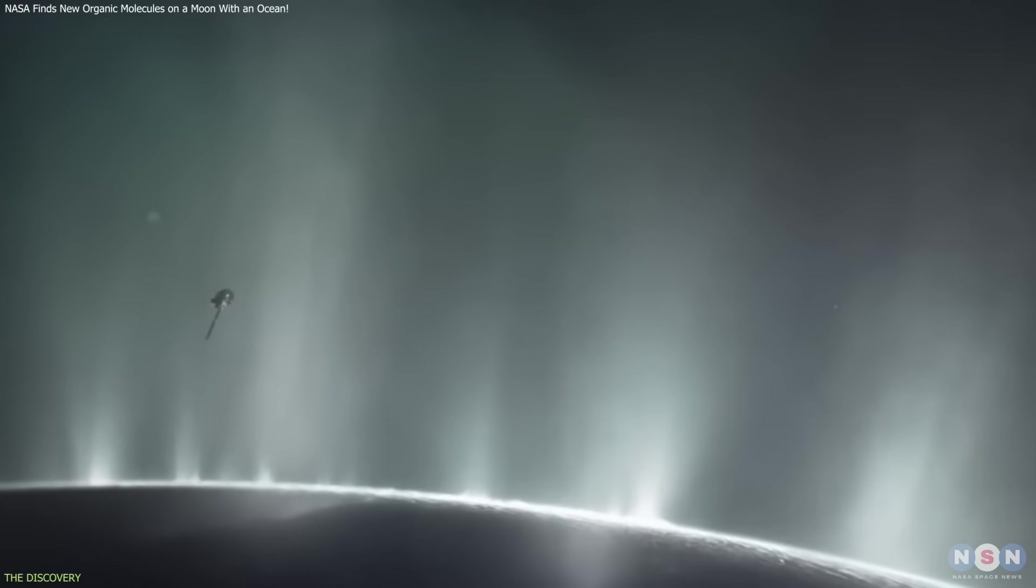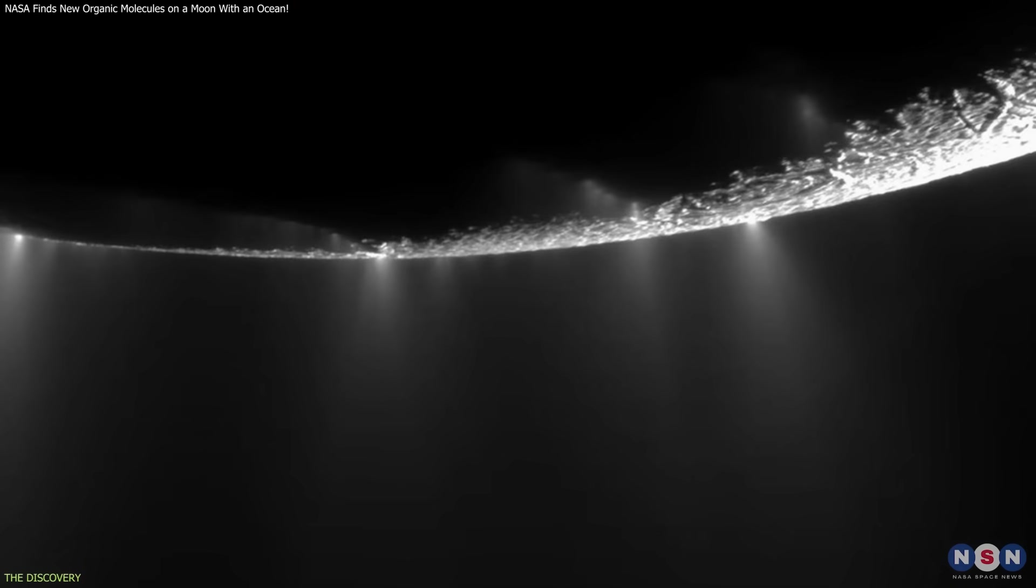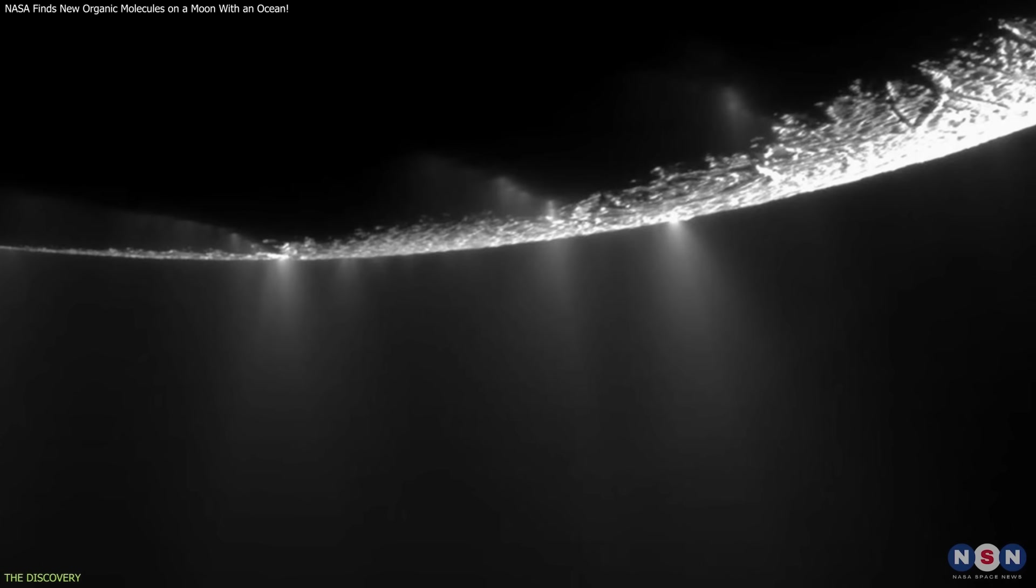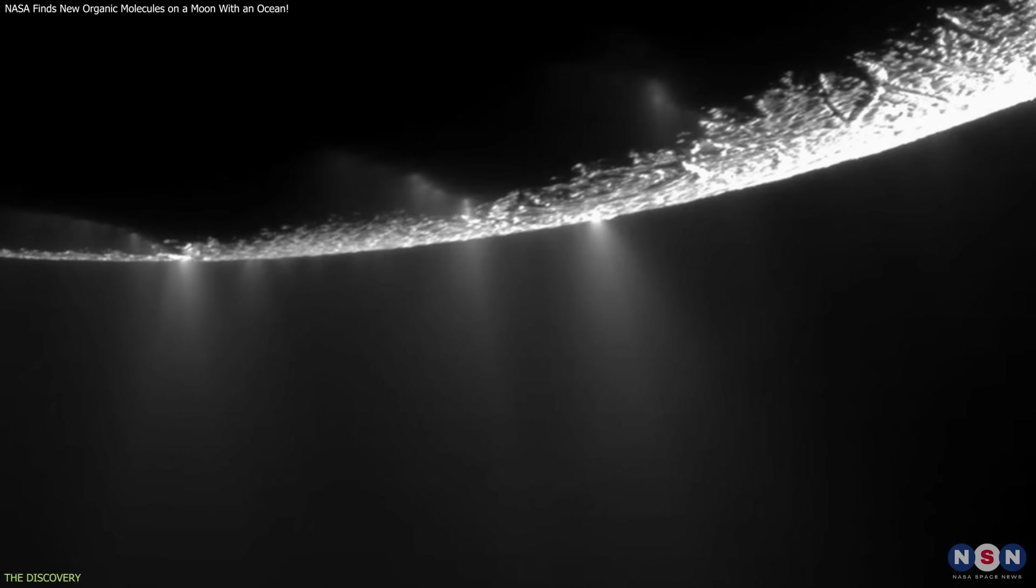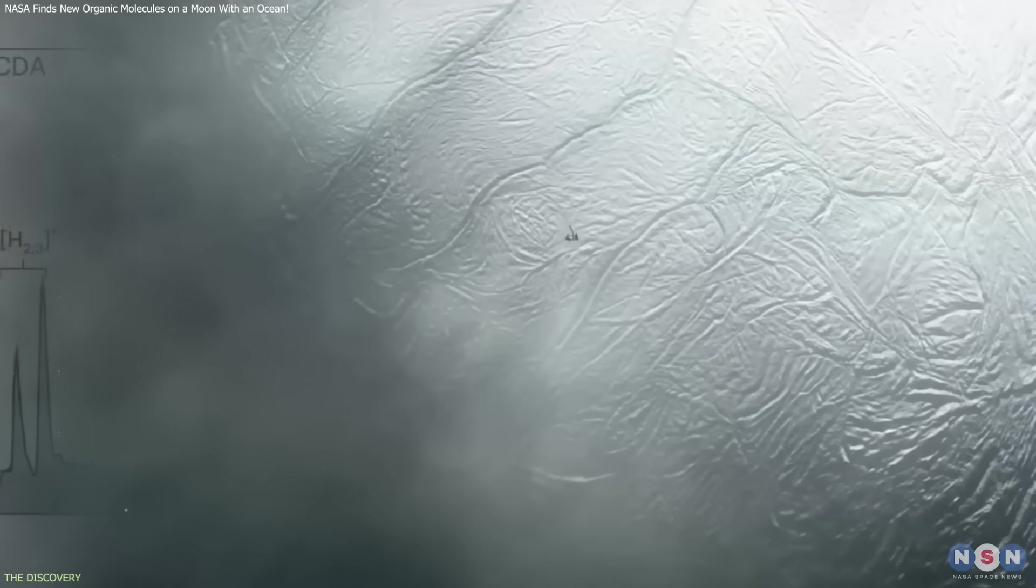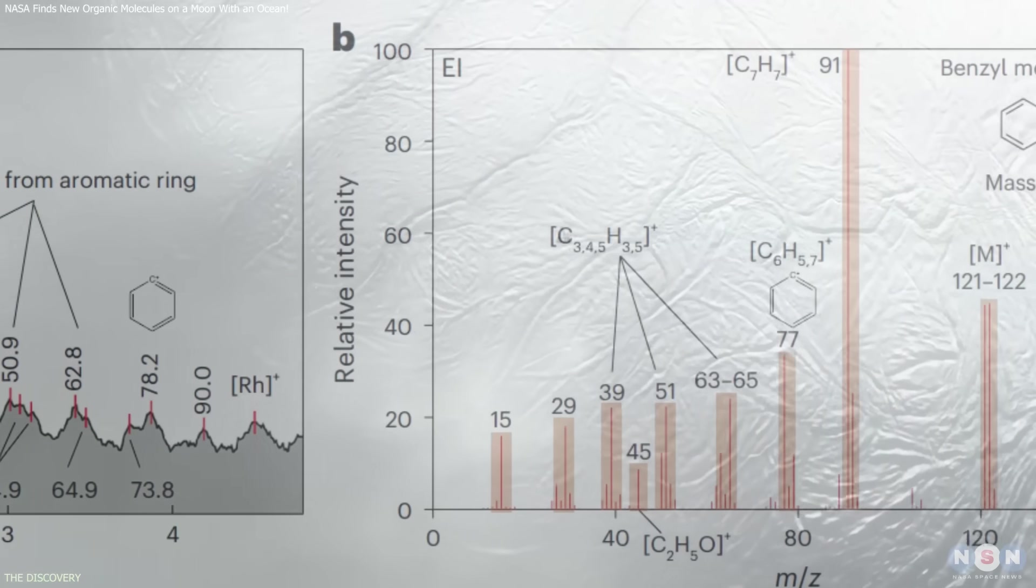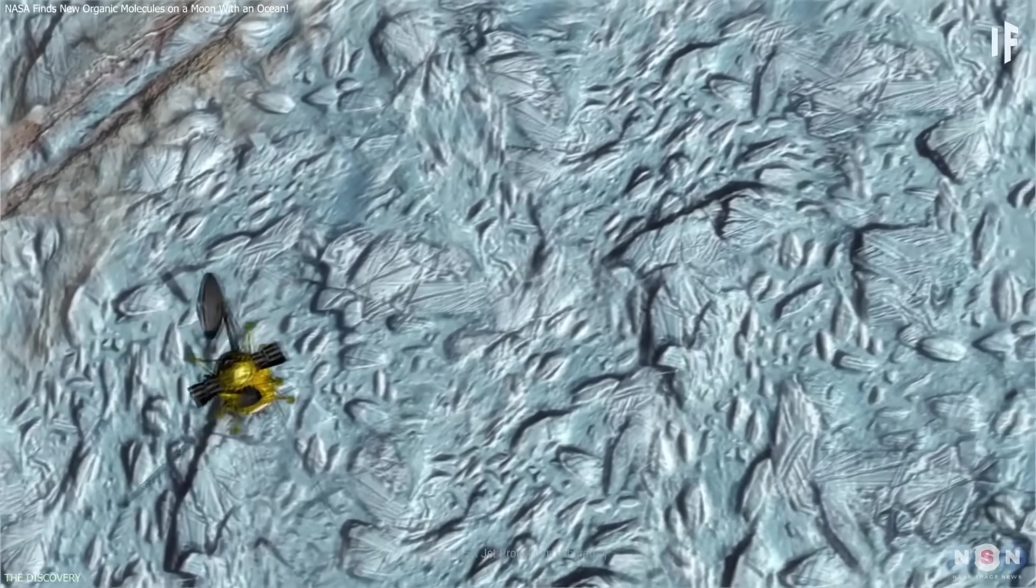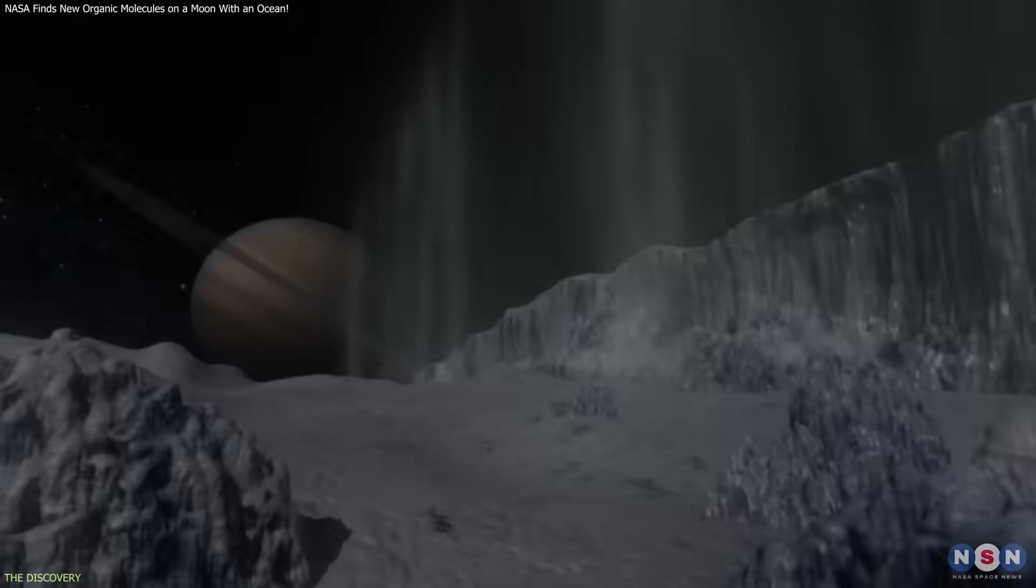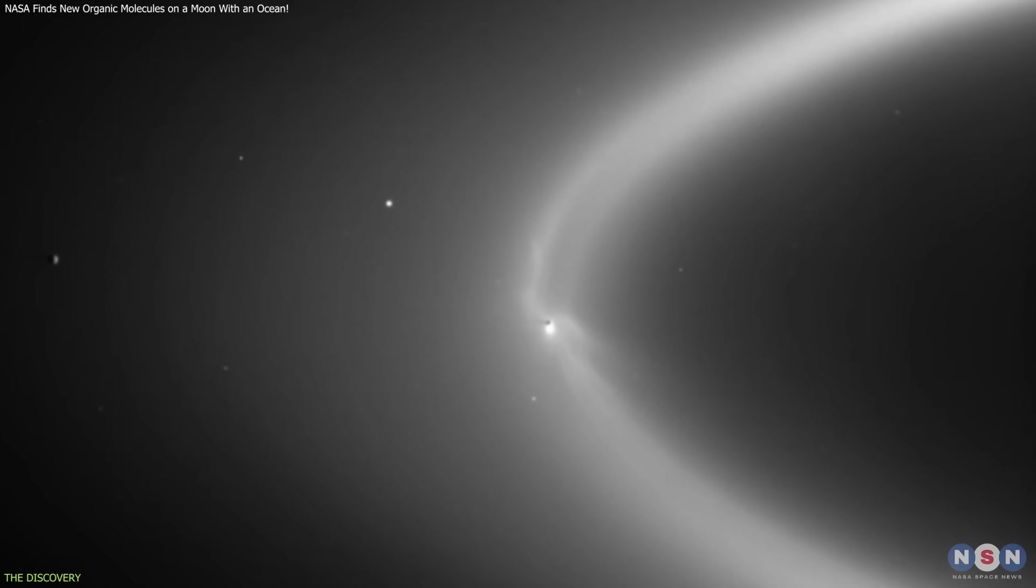As Cassini flew through these jets, its cosmic dust analyzer captured ice particles at nearly 18 kilometers per second relative speed. This impact instantly vaporized the grains, allowing the onboard mass spectrometer to read their chemical components. Earlier analyses focused mostly on particles that later drifted into Saturn's E-ring, where prolonged radiation exposure complicates the interpretation.